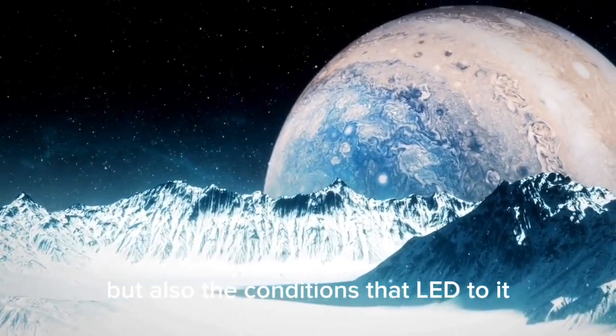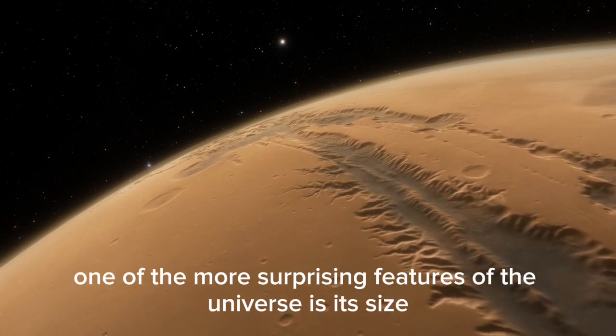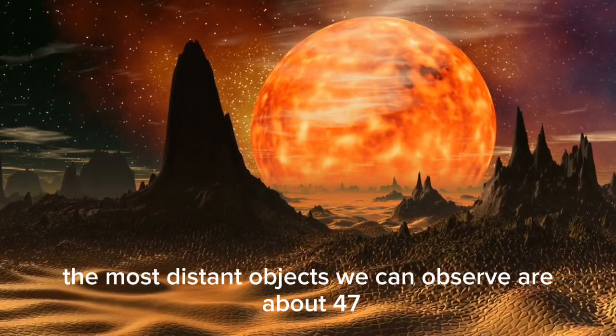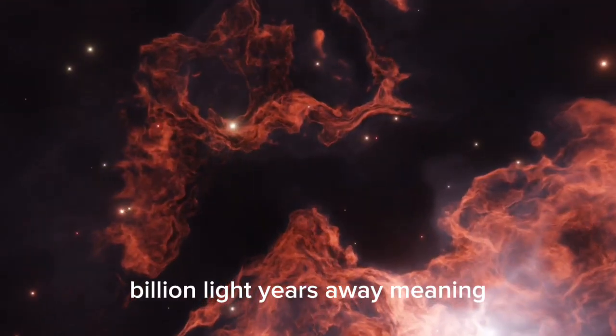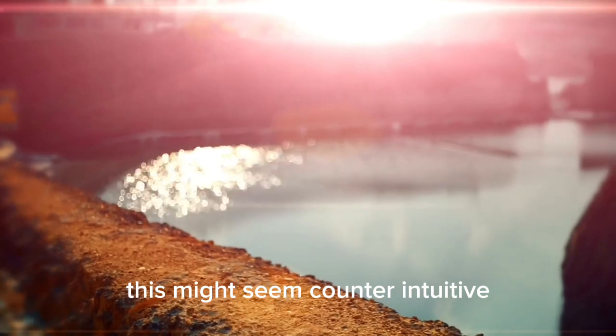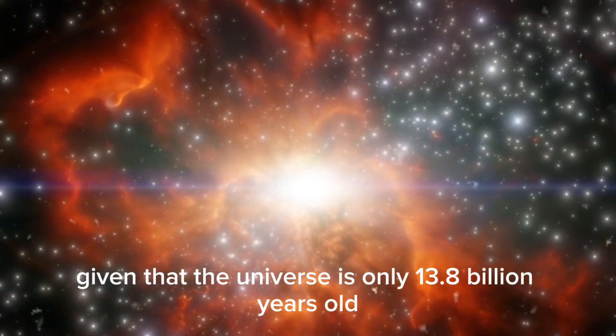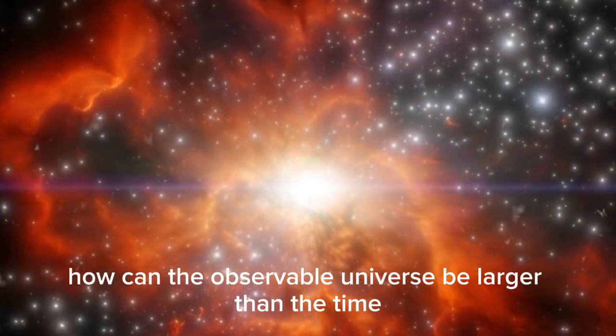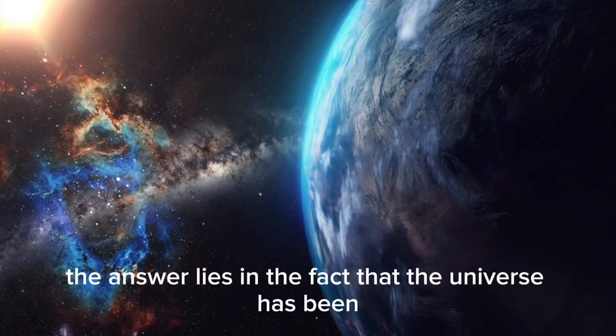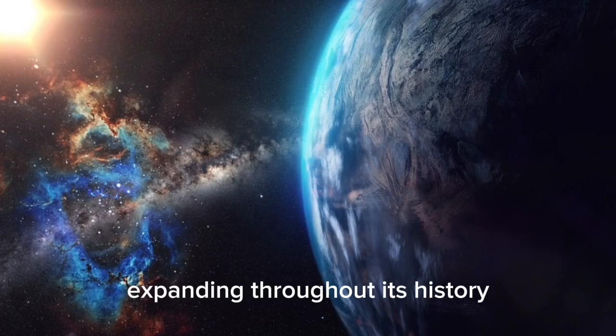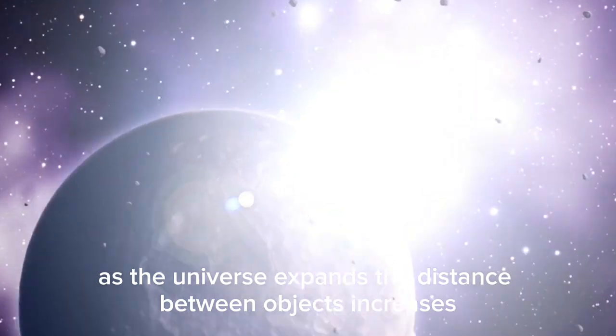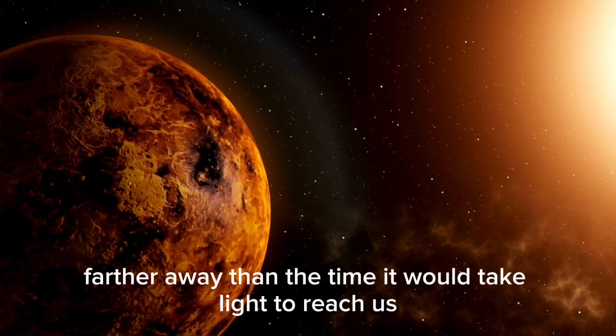One of the more surprising features of the universe is its size. The most distant objects we can observe are about 47 billion light years away, meaning the observable universe is approximately 94 billion light years across. This might seem counterintuitive given that the universe is only 13.8 billion years old. How can the observable universe be larger than the time it would take light to traverse the age of the universe? The answer lies in the fact that the universe has been expanding throughout its history. As the universe expands, the distance between objects increases.